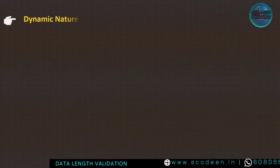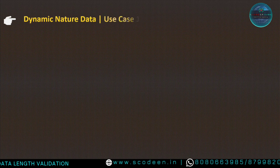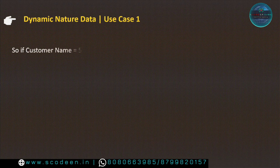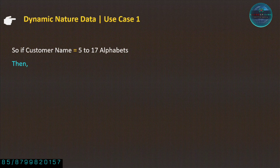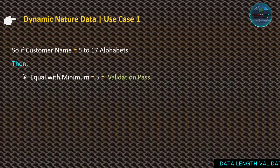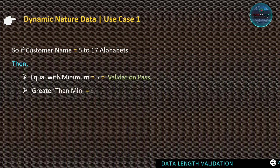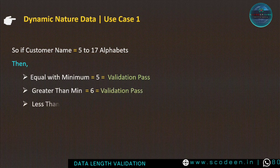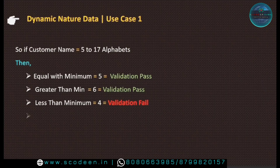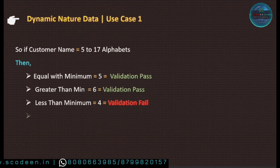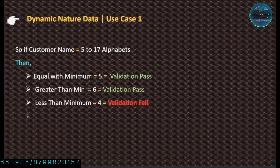Now we will explore use case 1 for dynamic nature data. Assume customer name is equal to 5 to 17 alphabets. Equal with minimum — that is 5 — validation must pass. Greater than minimum — that is 6 — validation must pass. Less than minimum — that is 4 — validation must fail. This is a negative condition.